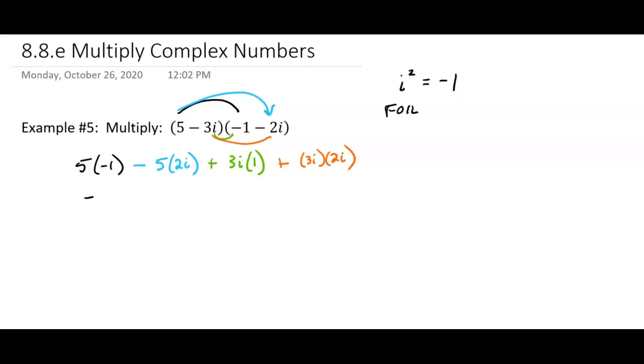All right, now let's see what we get. We get a negative 5 when we multiply the first one, then we get minus 10i, then we get plus 3i, and then we get on the end plus 6i². Okay, now as soon as you see that i², you know, okay, that can be replaced then with negative 1 there.